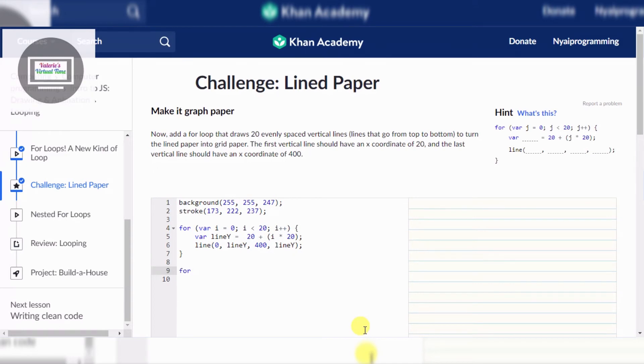For, var j equals zero, j less than 20, j plus plus. Awesome.